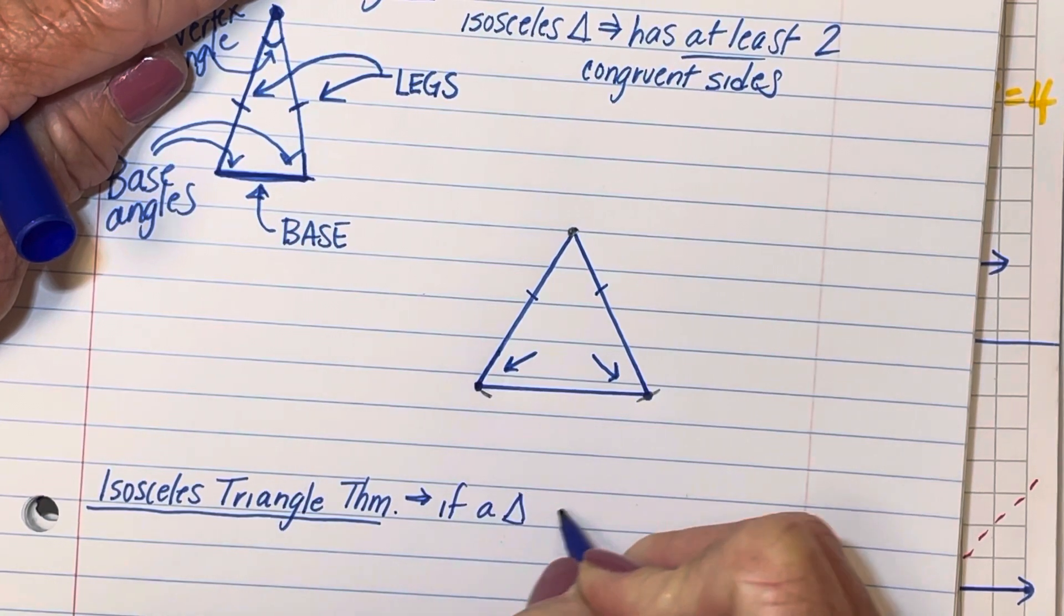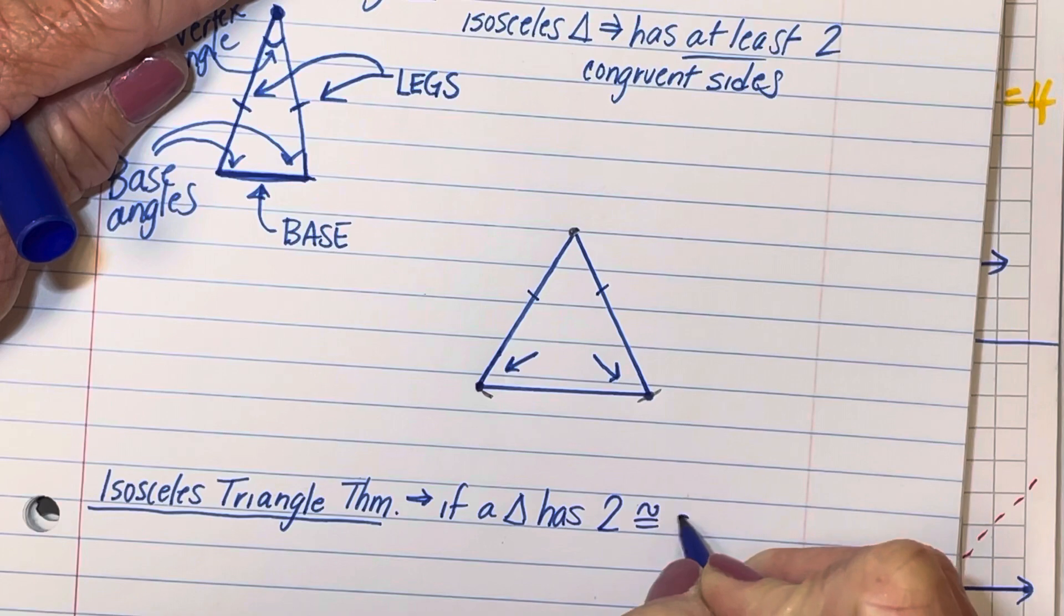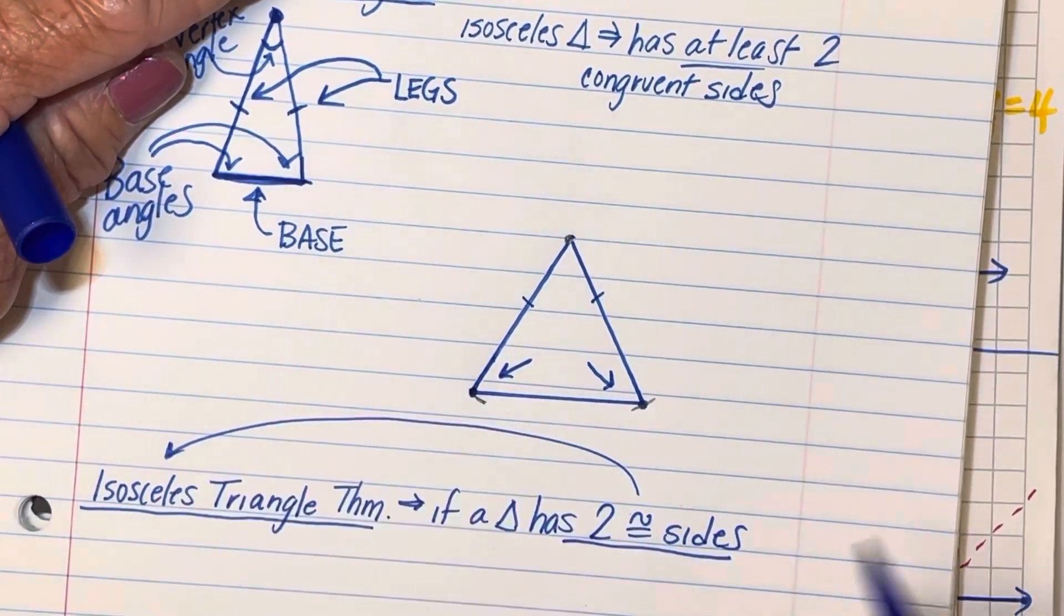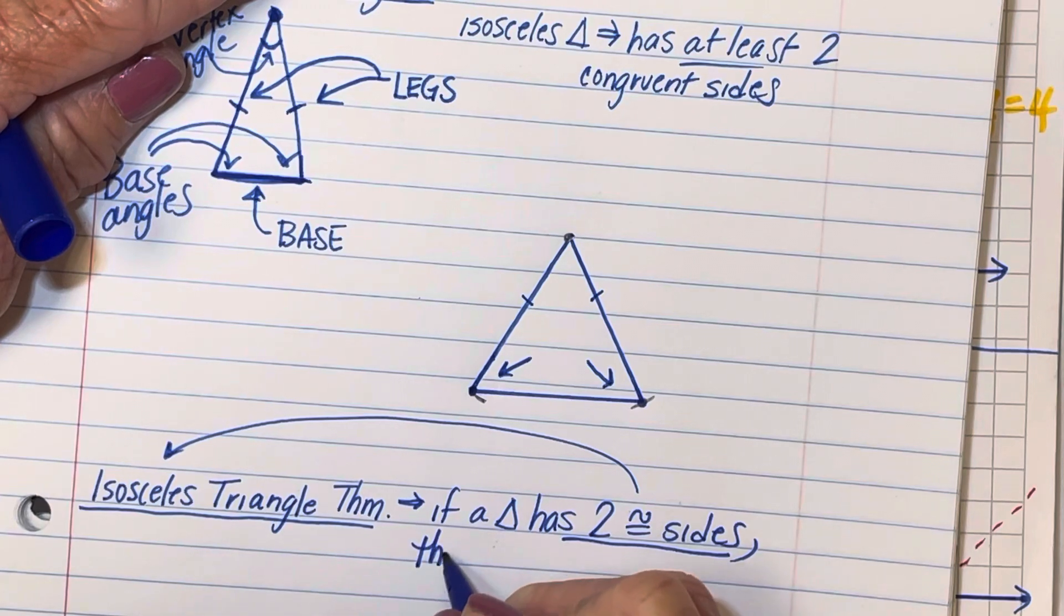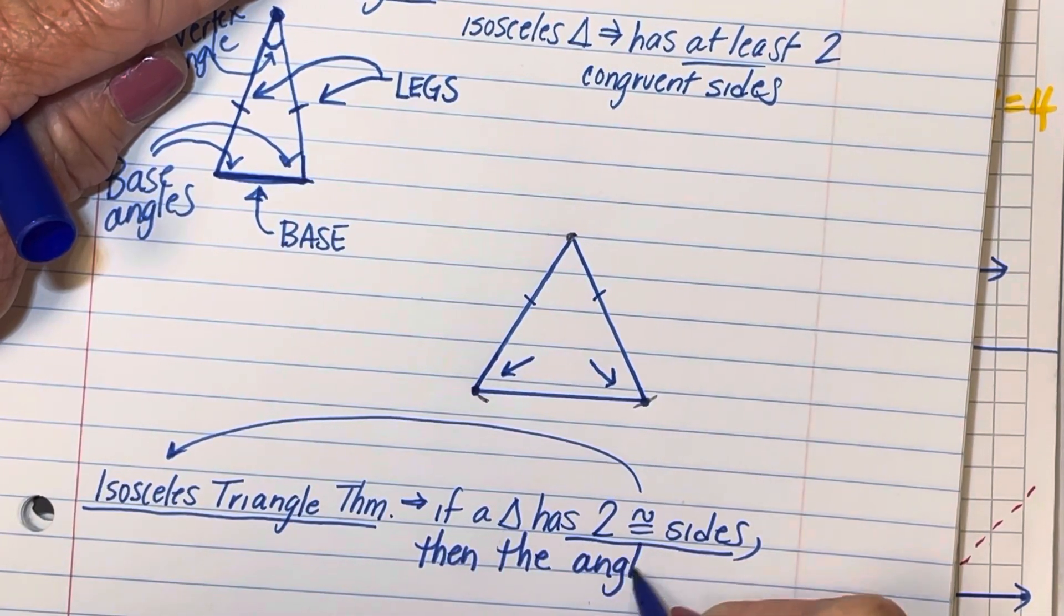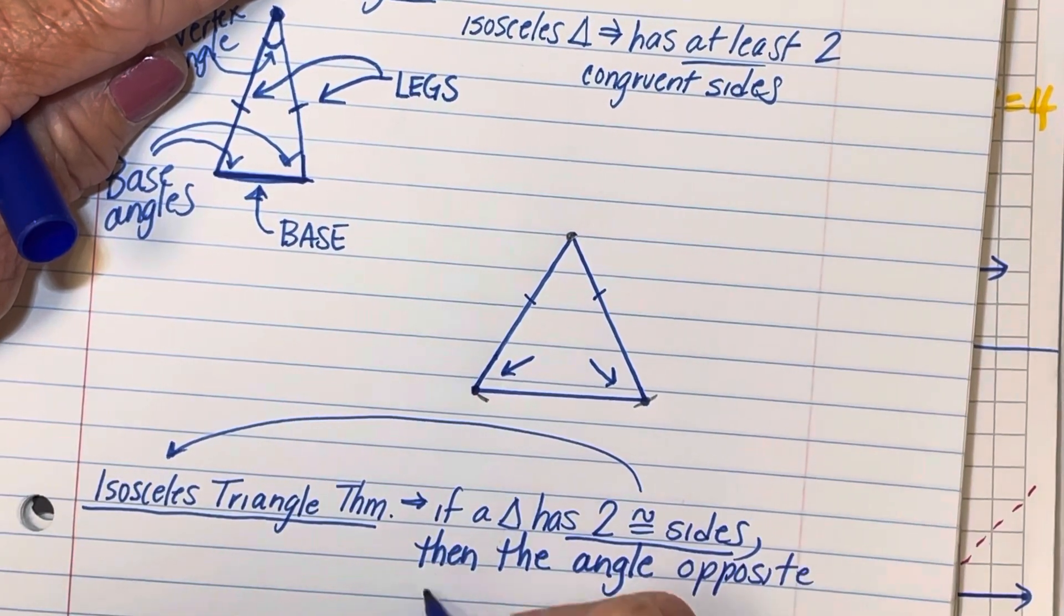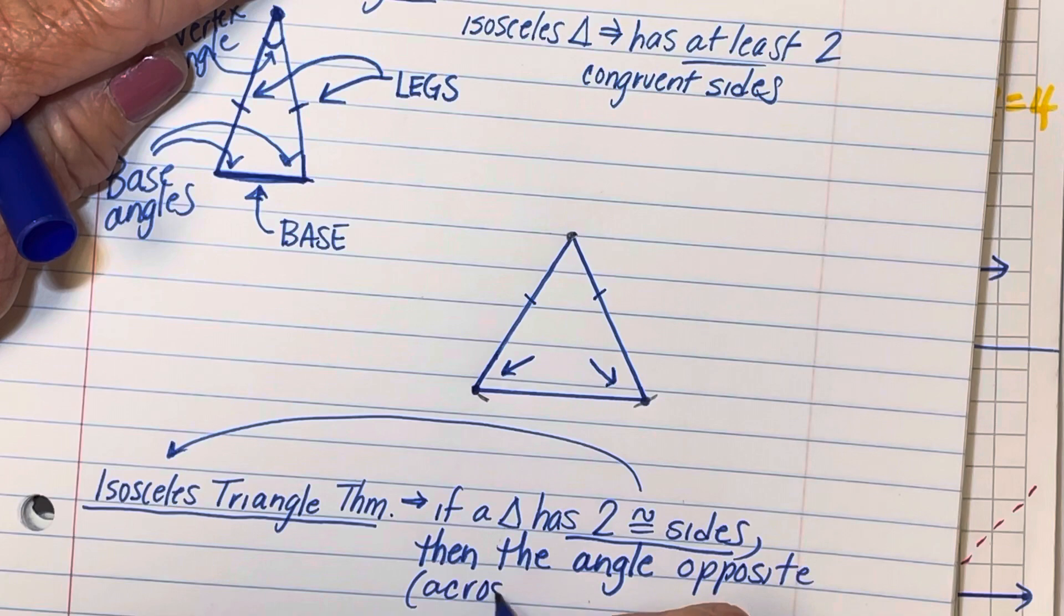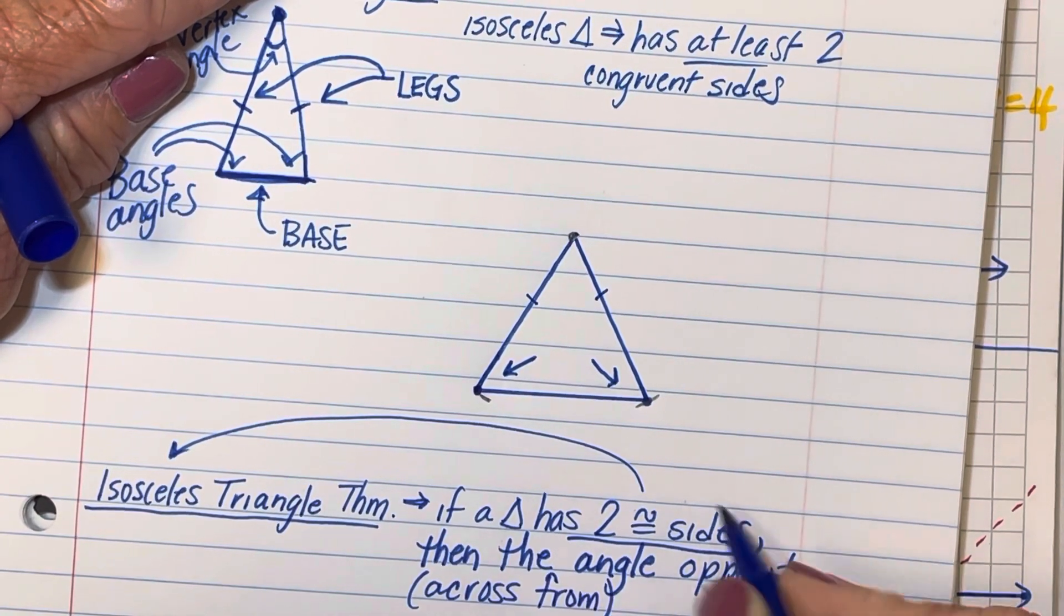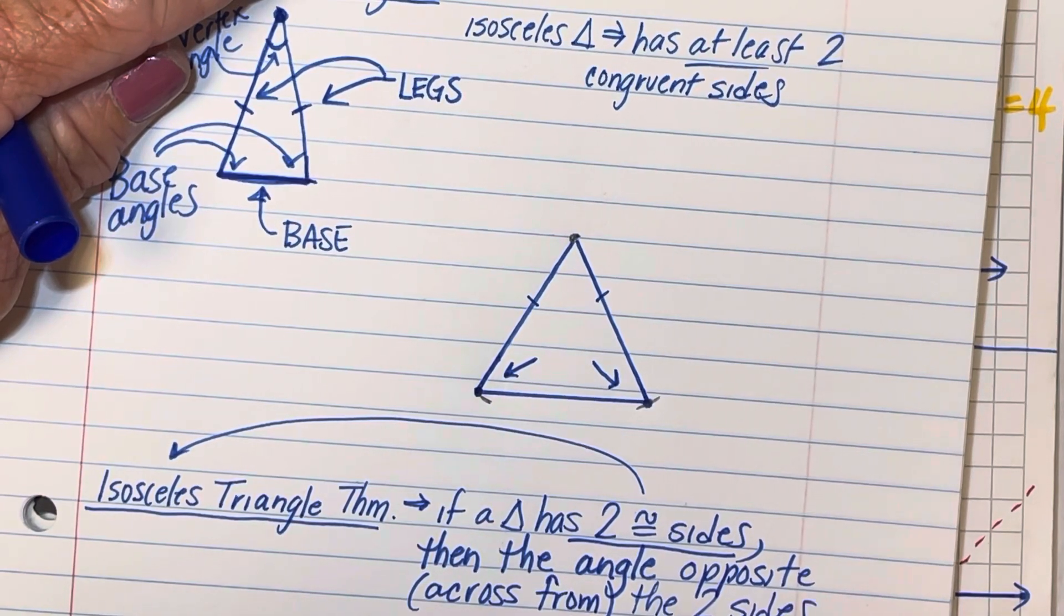If a triangle has two congruent sides, and by the way, that's going to make it isosceles, then the angles opposite or across from the two sides are congruent.